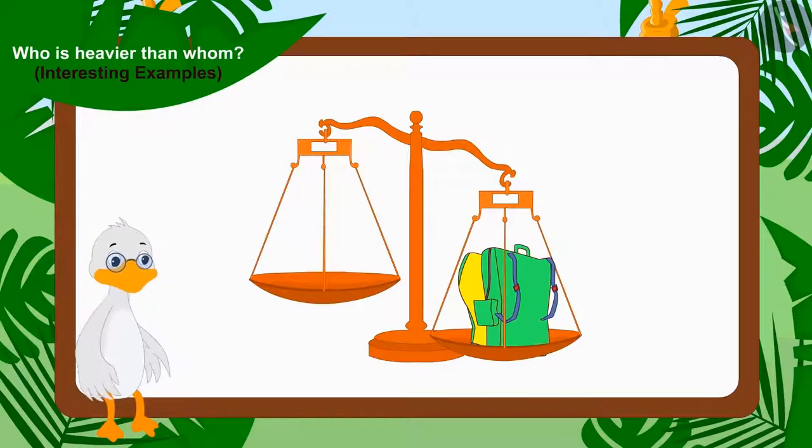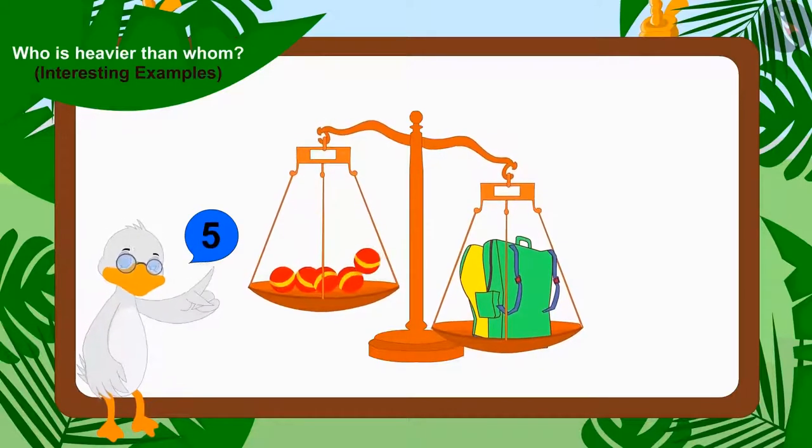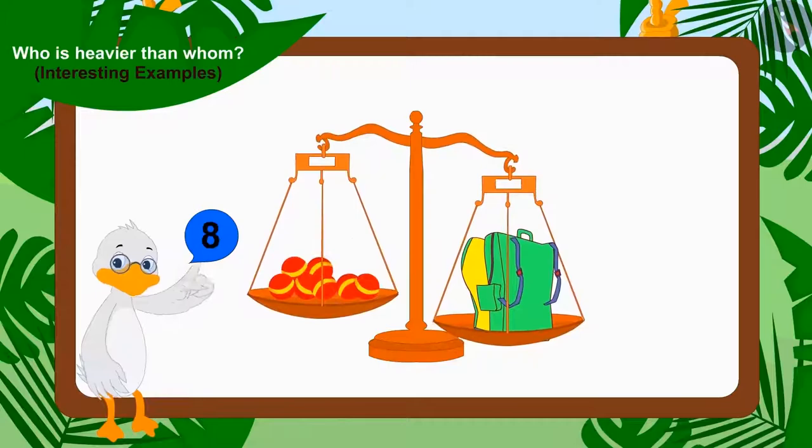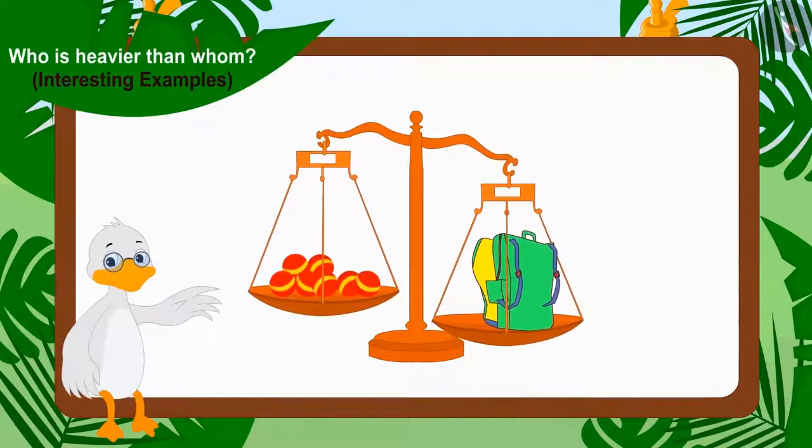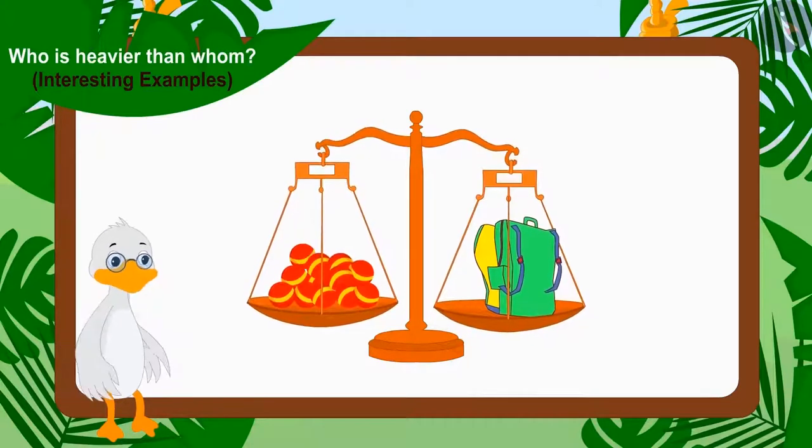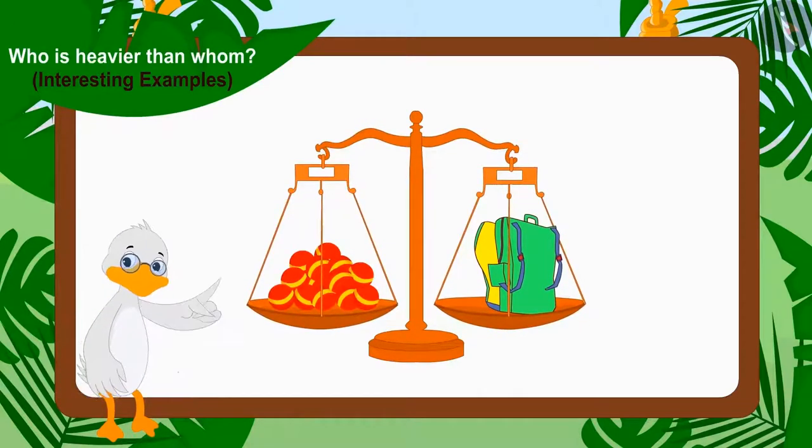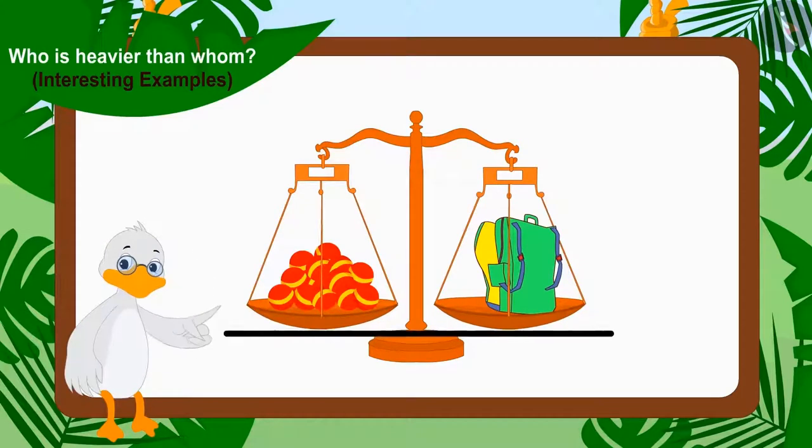Now, Uncle started placing the balls one by one in this way on the second plate. Uncle kept placing the balls on the scales until both sides of the scales came to the same position.